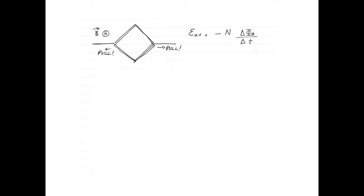So the average induced EMF is equal to minus n, which is the number of turns, multiplied by the change in magnetic flux divided by the change in time.